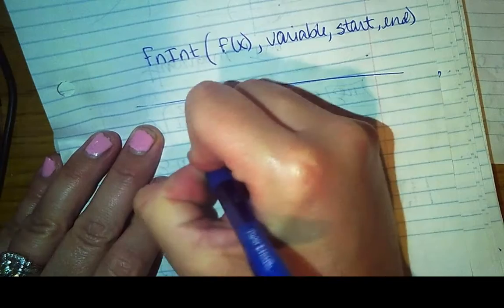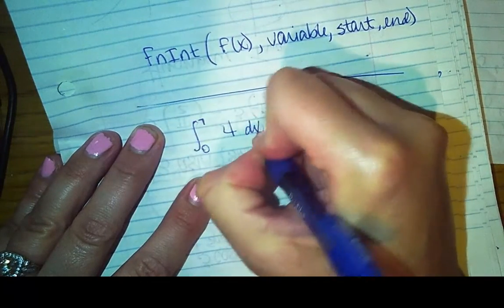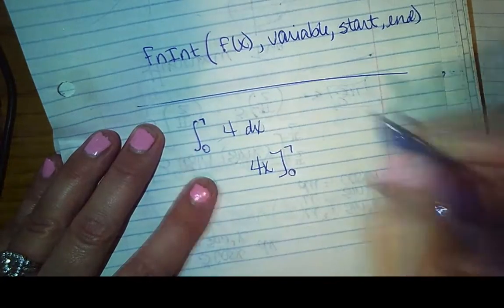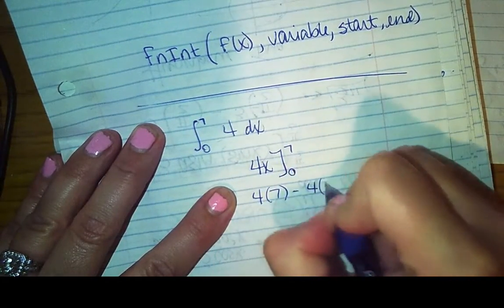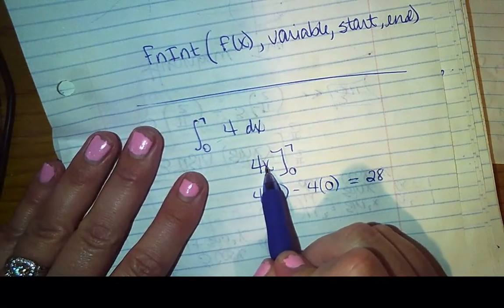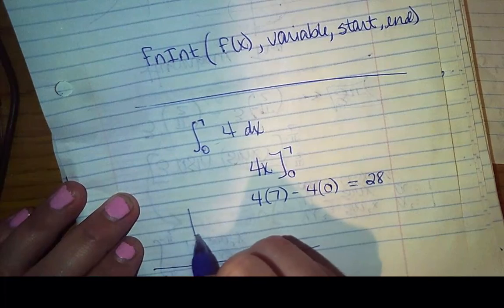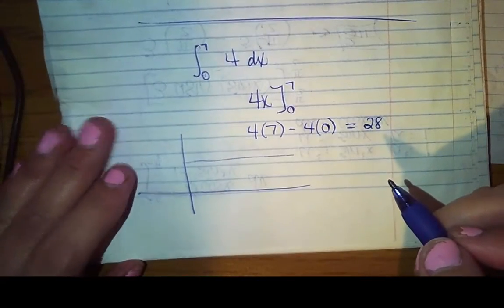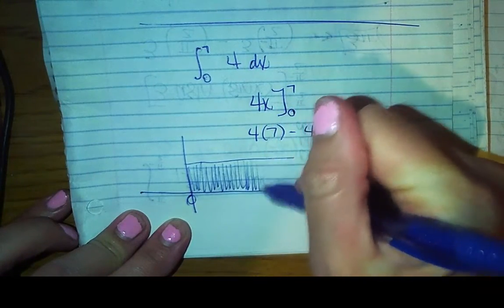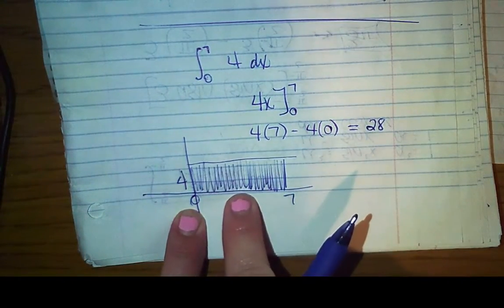So again, I'm going to make one up first, just because I want you to remember what you're doing. So for instance, if I would like you to integrate between zero and seven of four DX, the integral would be 4X, and then I evaluate from zero to seven. So four times seven minus four times zero, which gives me an answer of 28. Well, if it has a height of four and a width of seven, we just found the area of a rectangle, and it's 28.